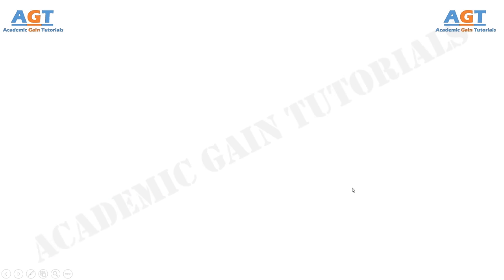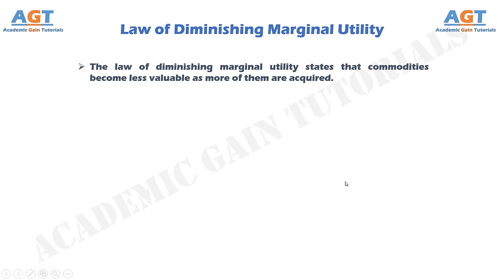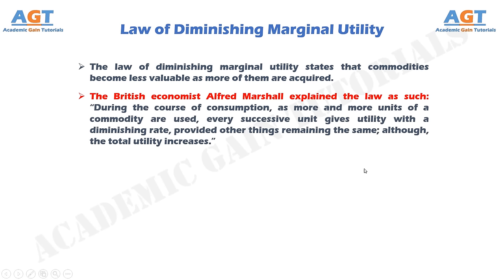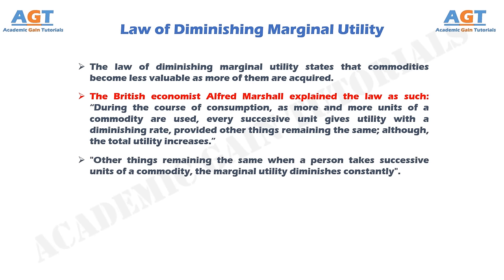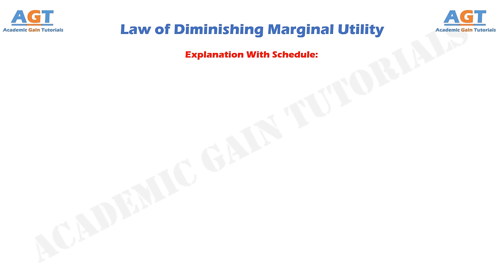The Law of Diminishing Marginal Utility states that commodities become less valuable as more of them are acquired. The British economist Alfred Marshall explained the law as such: during the course of consumption, as more and more units of a commodity are used, every successive unit gives utility with a diminishing rate, provided other things remain the same, although the total utility increases. The law can also be stated as: other things remaining the same, when a person takes successive units of a commodity, the marginal utility diminishes constantly.